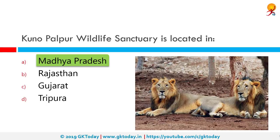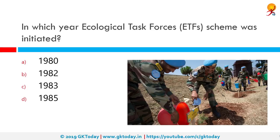Also popularly known as Kuno Palpur and Palpur Kuno Wildlife Sanctuary. In which year was the ecological task force scheme initiated? It was initiated in 1982. Set up in 1982, the territorial army's ecological task force is the world's first ecological battalion. One important objective was to promote and provide meaningful employment to local ex-servicemen in the territorial army, the country's second line of defense after the regular army.